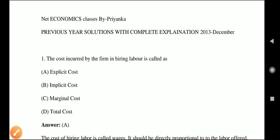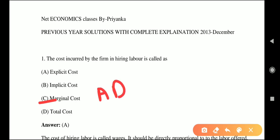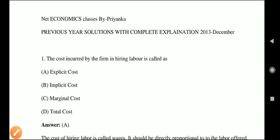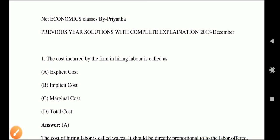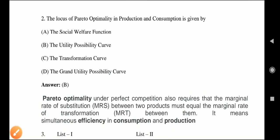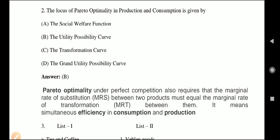Marginal cost is our additional cost, and total cost is fixed cost plus variable cost. The question asks: the cost incurred by the firm in hiring labor — how much payment does a firm have to make to hire labor? So the answer is Option A, Explicit cost. Now let's move to the next question.